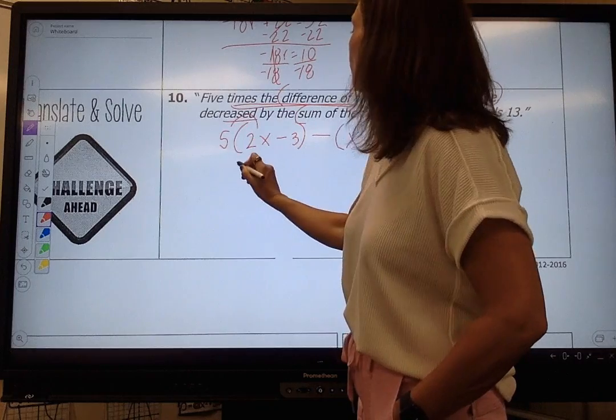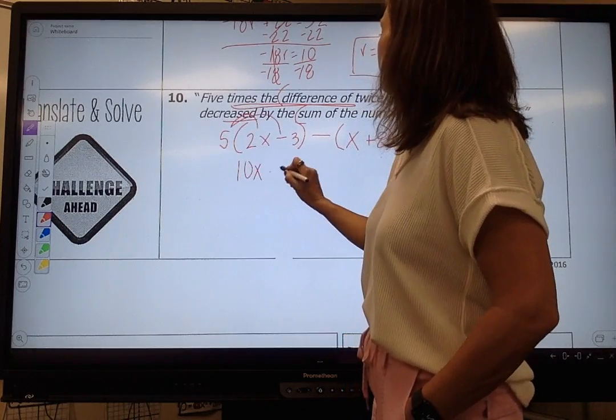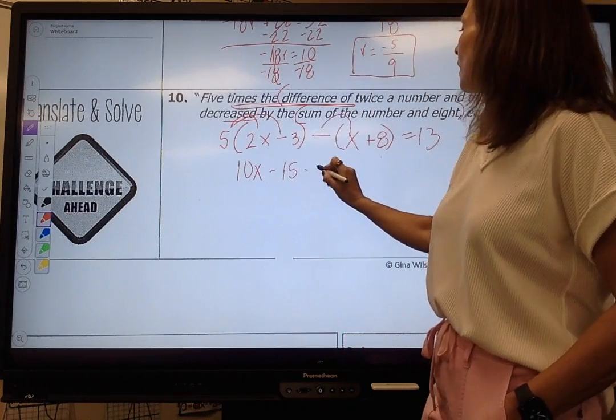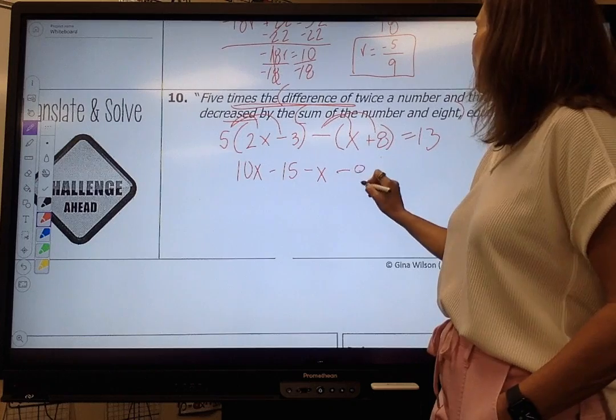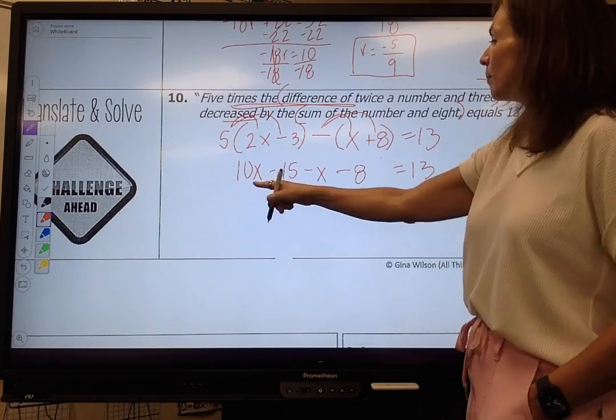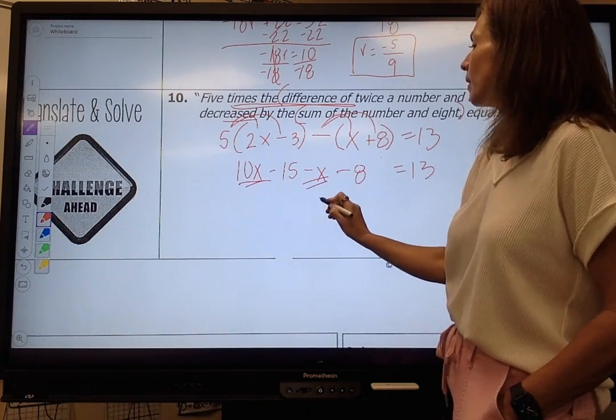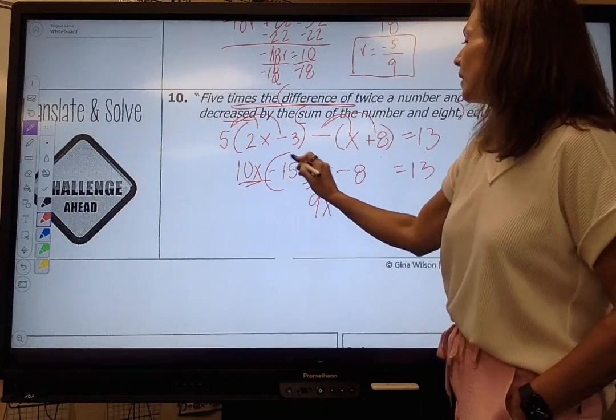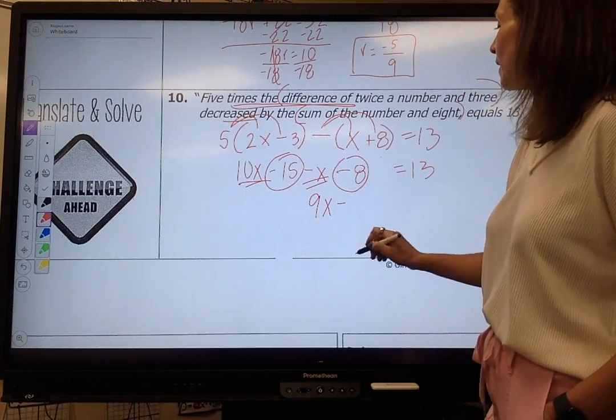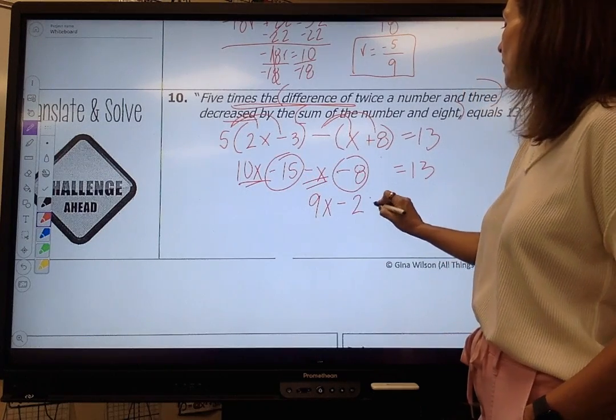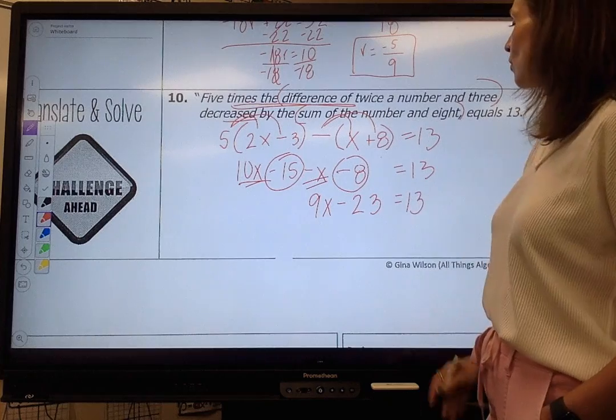Use distribution, distributive property. 10x minus 15, negative x, negative 8 equals 13. Combine like terms. 9x and a negative 15 and a negative 8 is a negative 23, and that equals 13.